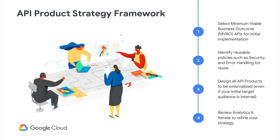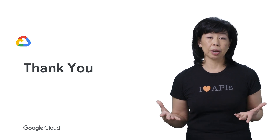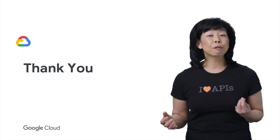It's always a good idea to design your product for external consumers, even if your initial audience is internal. Finally, review actual usage of your API products and refine them based on your metrics and user feedback to continuously improve your product. Like your API products, your product strategy will evolve over time. Hopefully, you've found a few strategies in this video to define your API product strategy. Thank you for watching.